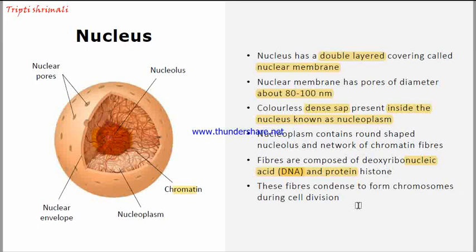The chromatin fibers condense to form chromosomes during cell division. They are thread-like structures and they take the form of chromosomes during cell division only — when the cell is about to divide, they become condensed and short, taking the form of chromosomes.